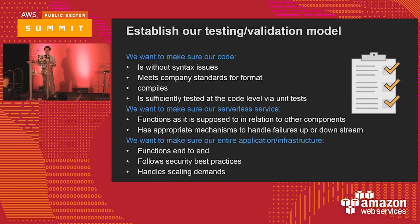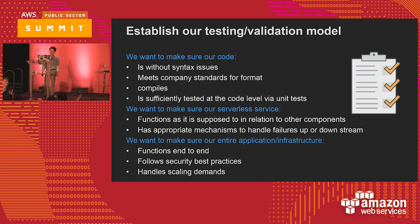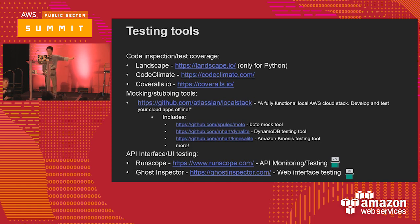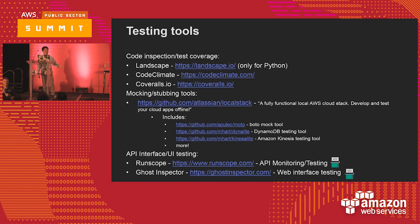For the testing stage, we have a lot of partners, third parties, and open-source tools integrated with us. There are code inspection and test coverage tools. One nice thing is Atlassian just released LocalStack, which allows you to run a local DynamoDB and local environment for your Lambda function so you can test locally - which is really nice. We also have API interface testing tools and many open-source and third-party options available.